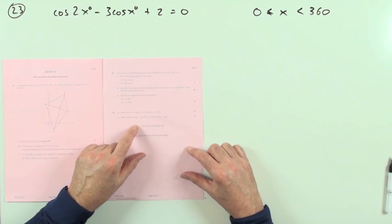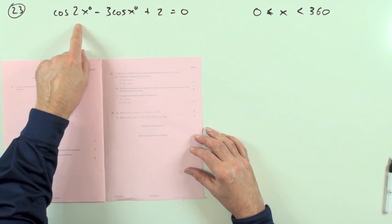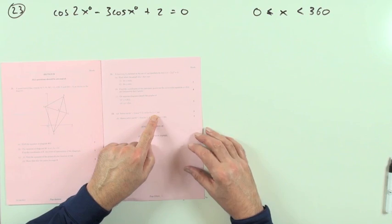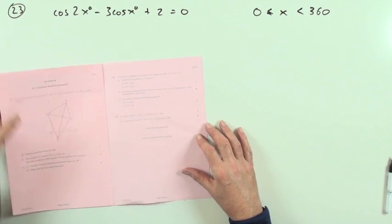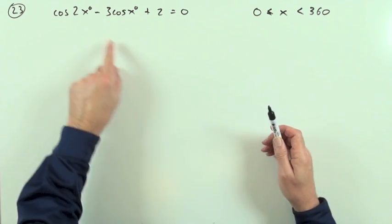Number 23: solve this equation, cos 2x minus 3cos x plus 2 equals 0. It's a double angle equation in degrees, so I'll be breaking that down into a single angle, getting a quadratic. Sometimes you think degrees are nice and easy, but it's actually a pest because I'll have to keep writing these degree signs.